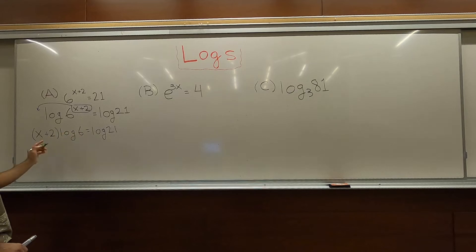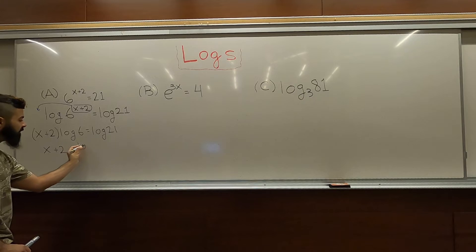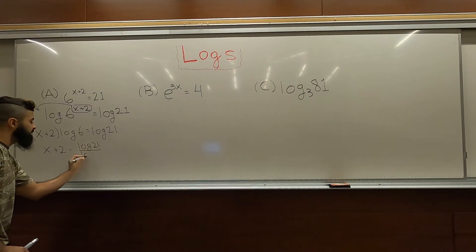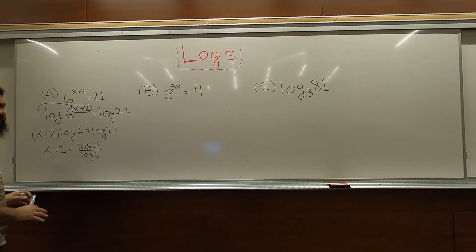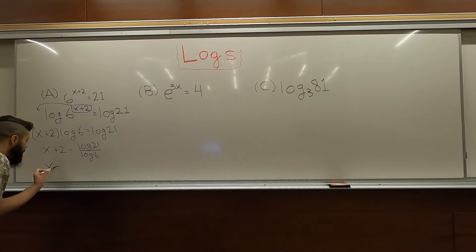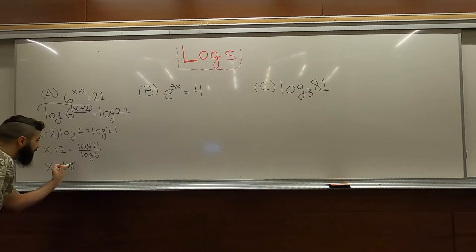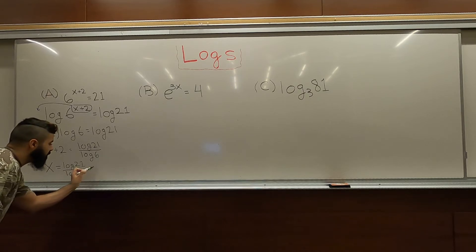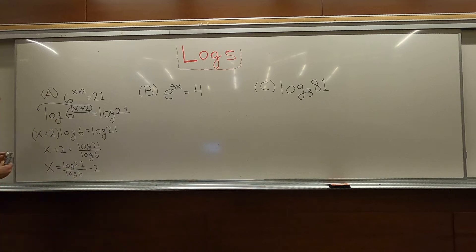Divide both sides by log 6. Log 21 divided by log 6. We're not going to put this into the calculator. You guys can do it yourself. It's not that difficult. So, x is equal to log of 21 divided by log of 6 minus 2. Is the answer for a.